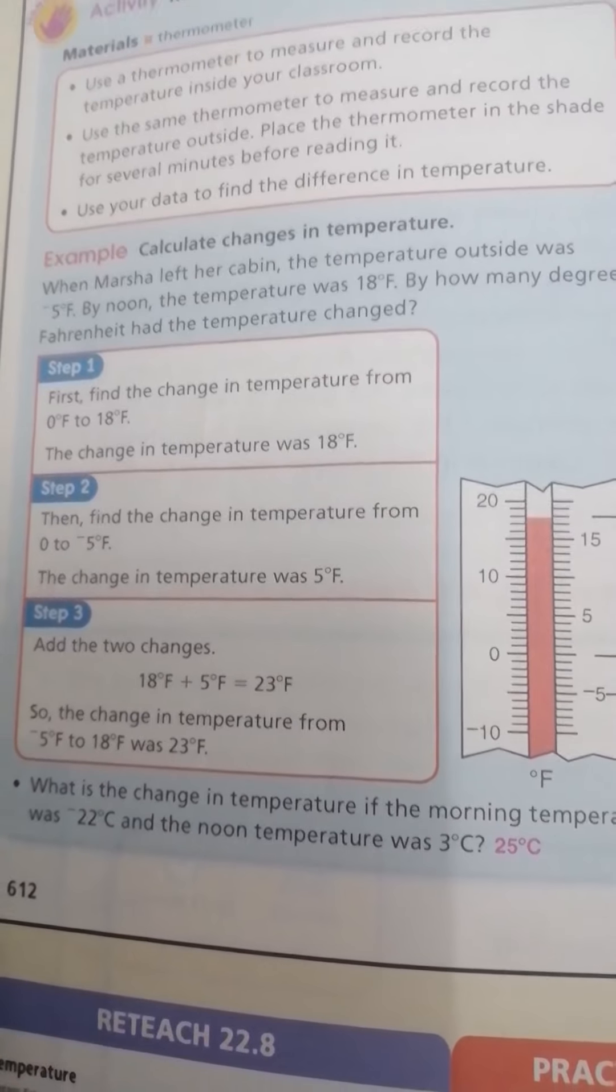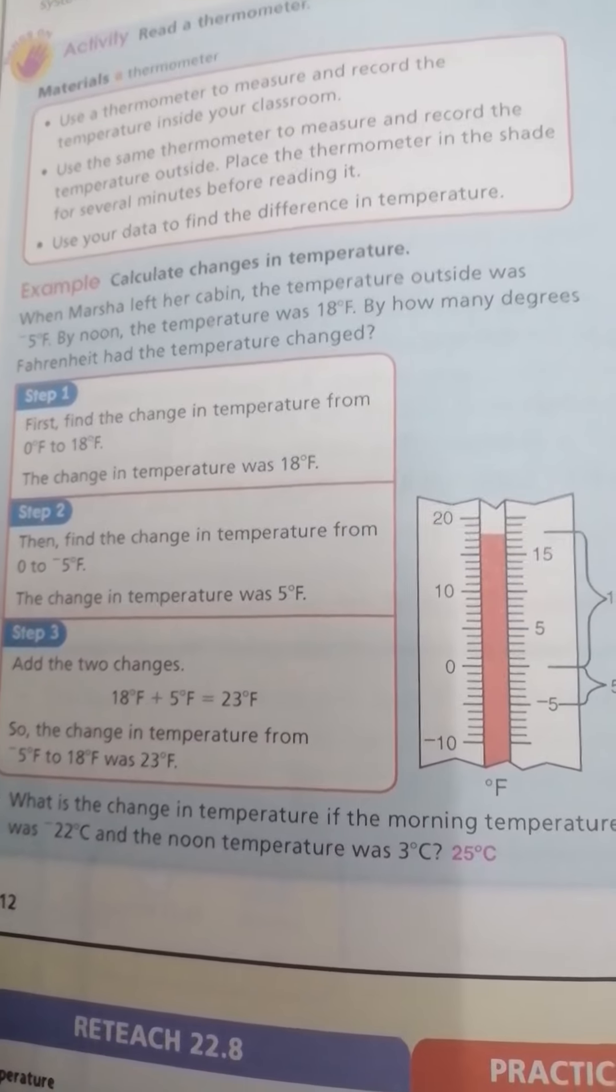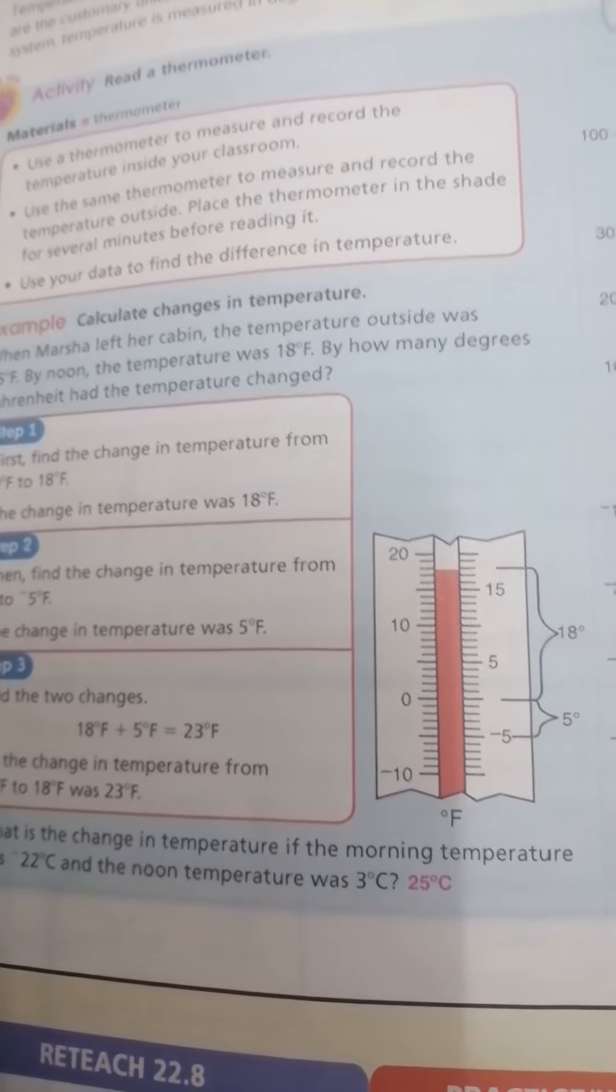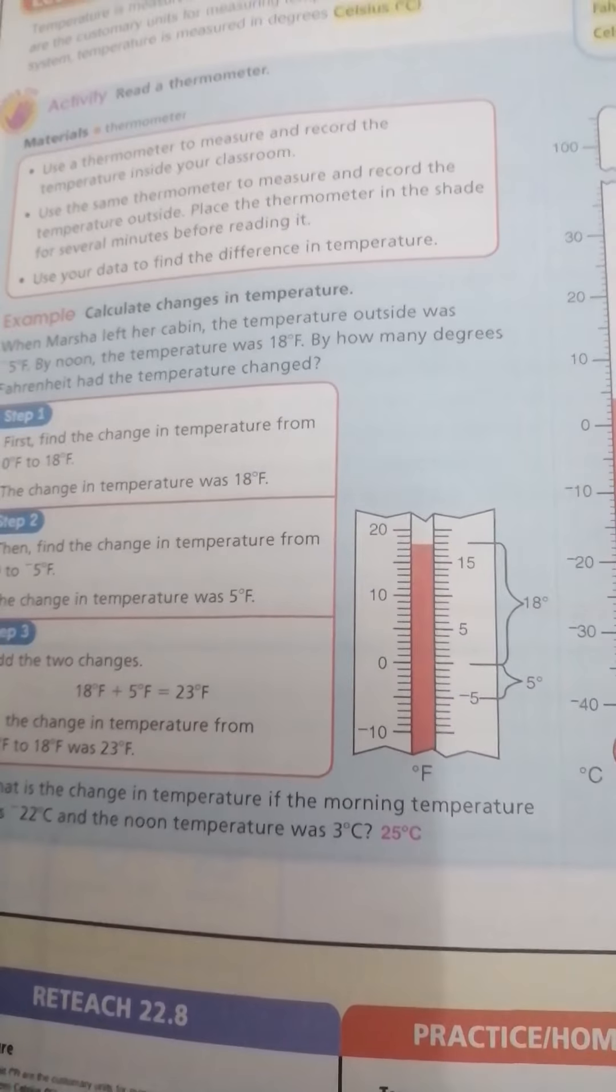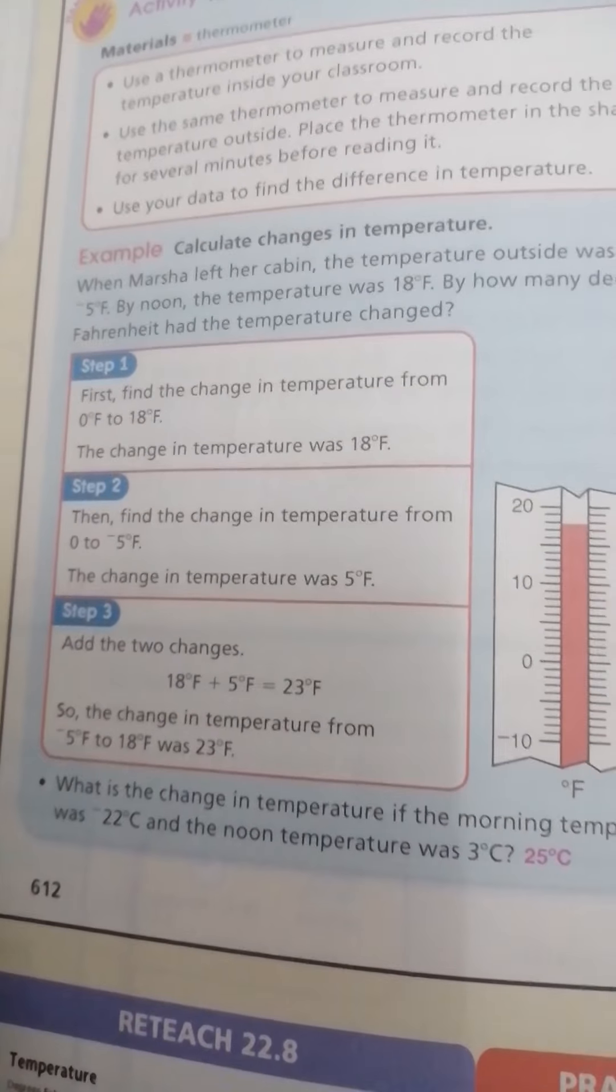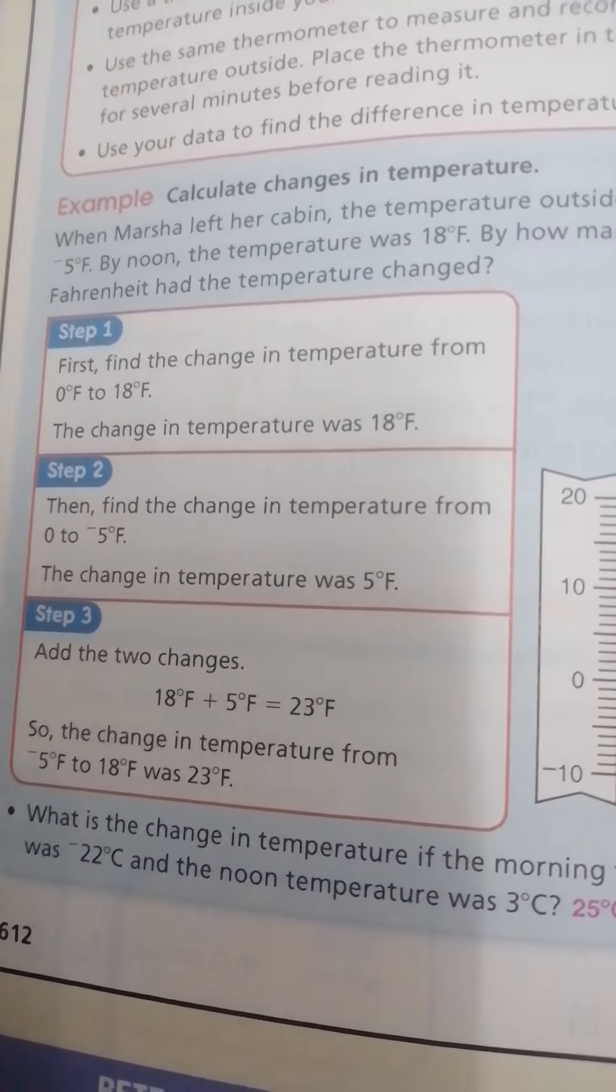Now, look at here. Find the change in temperature from 0 to negative 5. Negative 5 will make what? Minus. Here, minus, because we start from 0 which is biggest, to less.